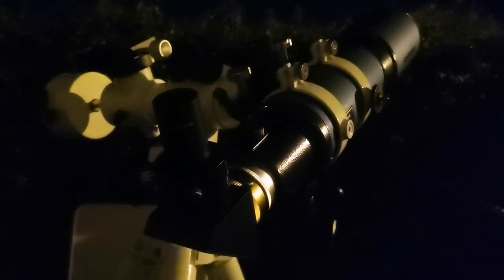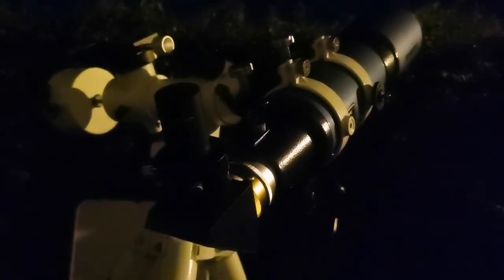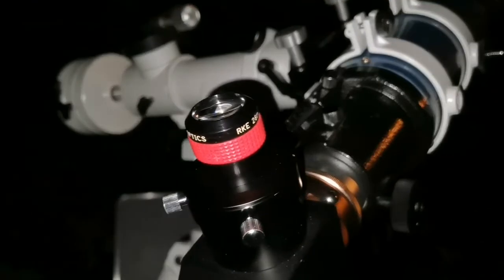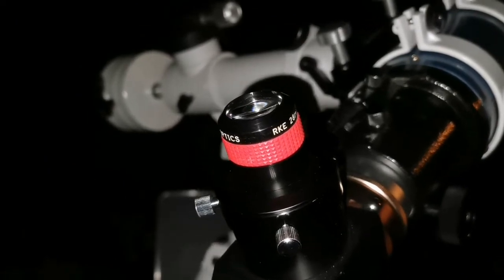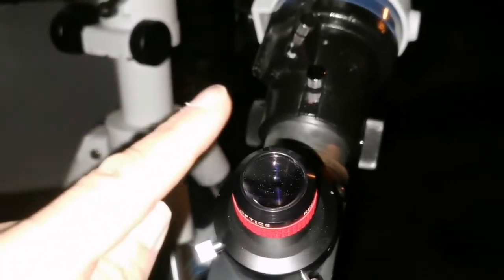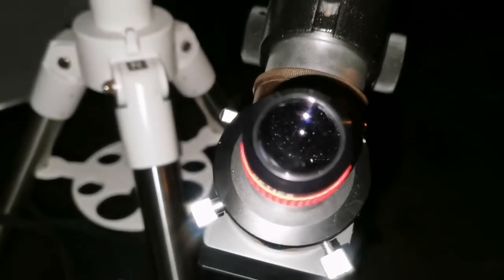Let me bring the original RKE 28 millimeter from the Edmund Scientific. This is the RKE 28 millimeter. It has a higher magnification than the 40 millimeter. The image is floating. You don't see that eyepiece at all, the image is floating.